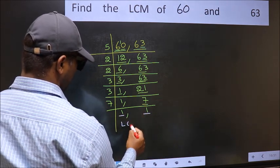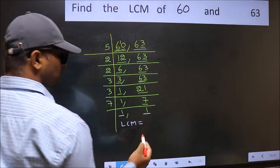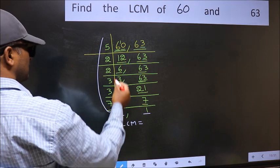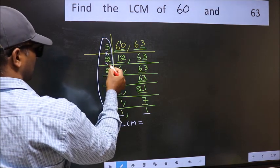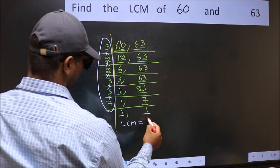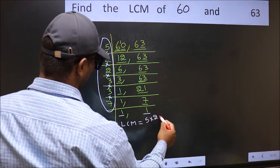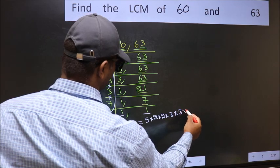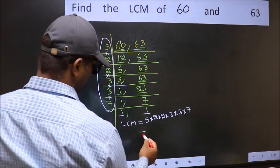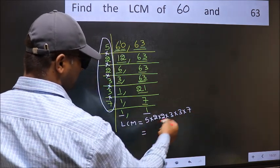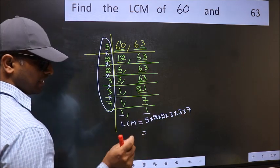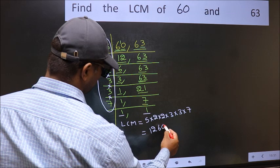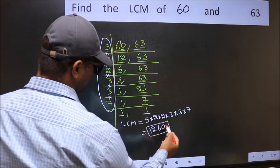So our LCM is the product of these numbers. That is 5 into 2, into 2, into 3, into 3, into 7. When we multiply these numbers, we get 1260 as our LCM.